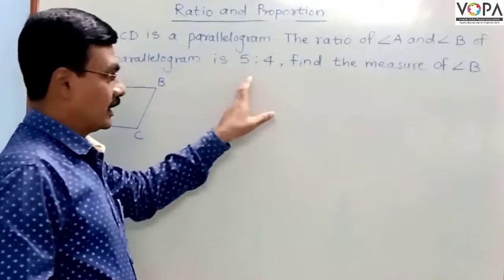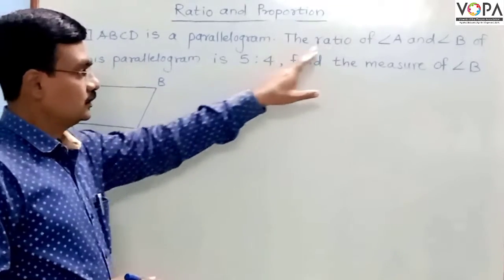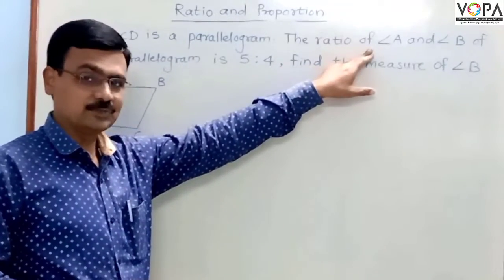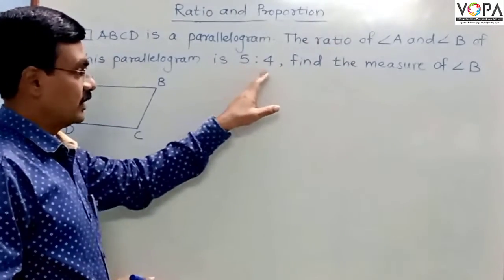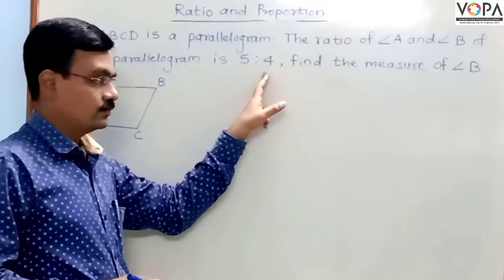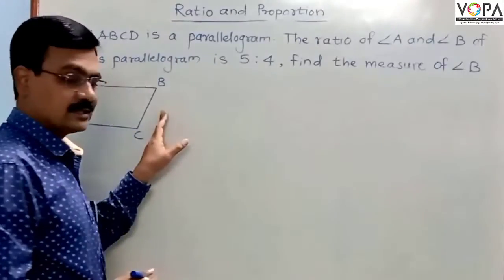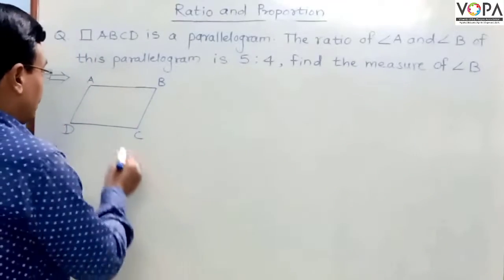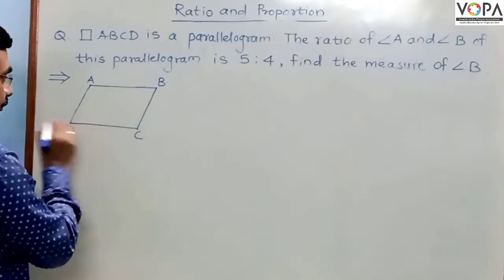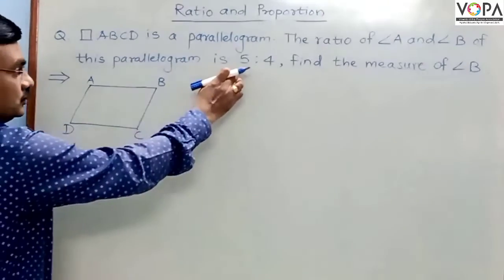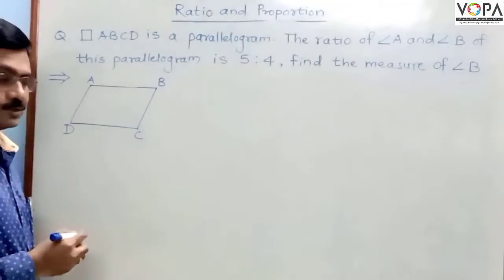We have a parallelogram, and the two angles are measured by the ratio. Measure of angle A to measure of angle B is 5 to 4, and we have to find the measure of angle B. Here is the parallelogram ABCD. Those two angles, the measure of the angles, are in the ratio 5 to 4.